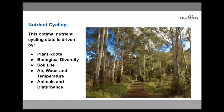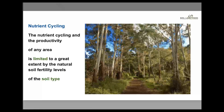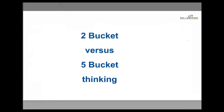This optimal nutrient cycling state is driven by plant roots, biological diversity, soil life, air, water and temperature, and also animals and the type of disturbance — whether that's fire, cyclones or cold snaps. The final thing to remember: the productivity and nutrient cycling of an area is greatly limited by the natural soil fertility of a soil type. The natural underlying soil type has a certain amount of fertility, and the productivity of a landscape is significantly influenced by that.